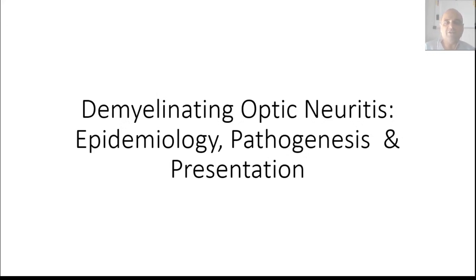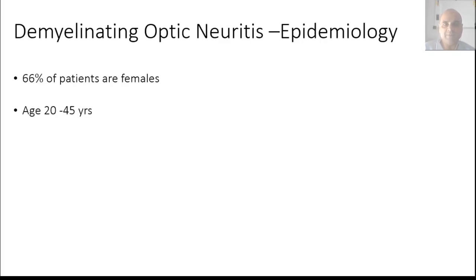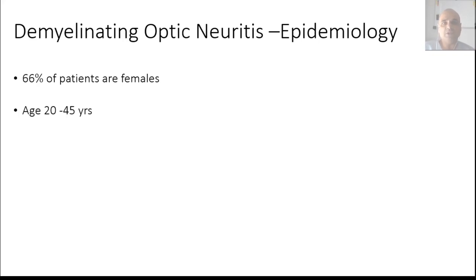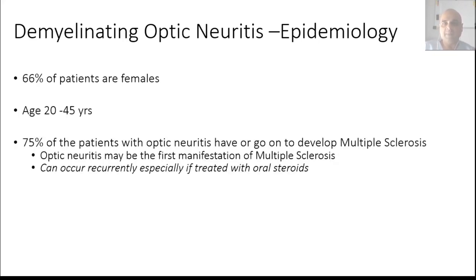Regarding the epidemiology of demyelinating optic neuritis: 66 percent of patients are female, and again between 20 and 45 years of age. The majority of patients who have optic neuritis have the demyelinating type, so most of the statistics are skewed towards demyelinating optic neuritis. Importantly, 75 percent of patients who have optic neuritis either have multiple sclerosis or go on to develop multiple sclerosis.